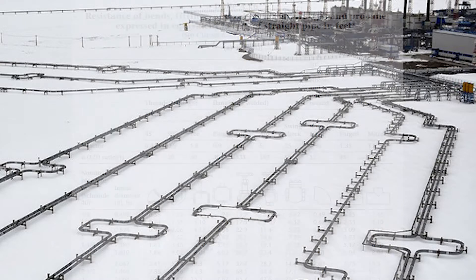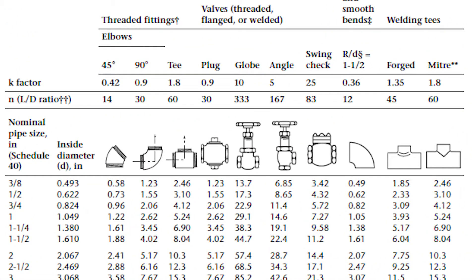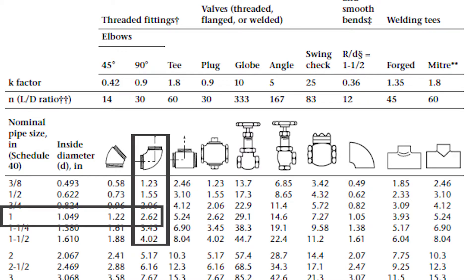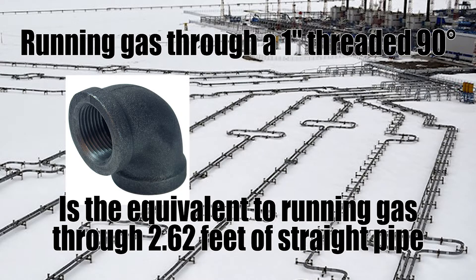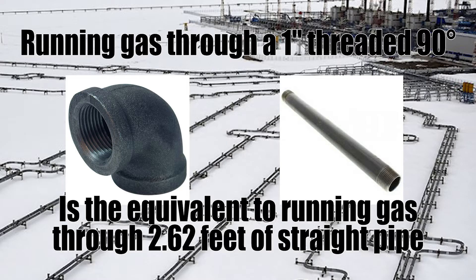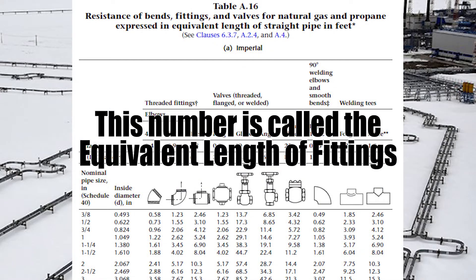The last table is Table A16: Resistance of Bends, Fittings, and Valves for Natural Gas and Propane, expressed in equivalent length of straight pipe in feet. This is the table we'll need to use to factor in for our fittings. For example, for a 1-inch 90-degree elbow, I come down to the nominal pipe size of 1 inch and across to the 90-degree elbow column, which gives me a number of 2.62. This means running gas through that 1-inch 90 is the equivalent of running gas through a 2.62-foot-long piece of straight pipe — that is the resistance experienced from it. We call these numbers equivalent length, and we'll need to factor that into the longest measured run.